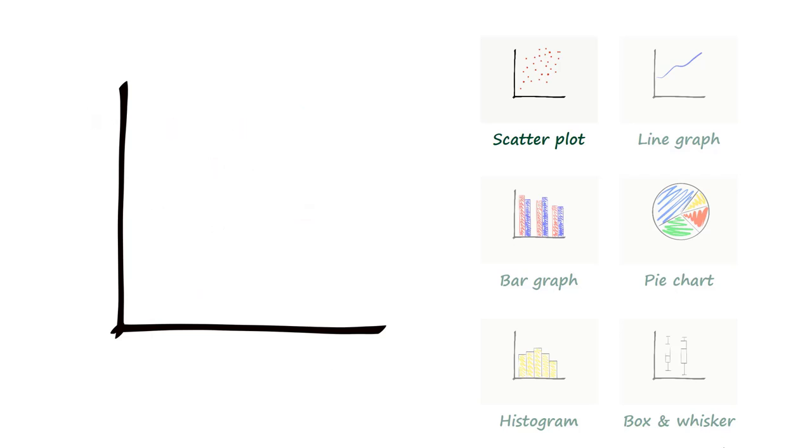Line graphs can also be used to show the relationship between two variables. Line graphs can be used to identify trends over time, with time going along the x axis. Common variables on the y axis could be growth, population or temperature.